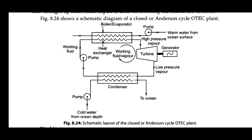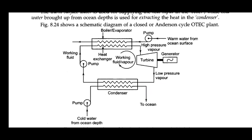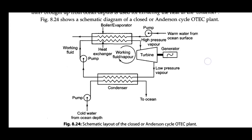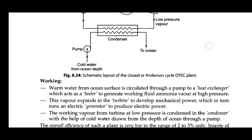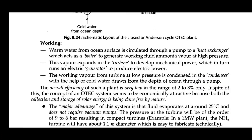Cold water is circulated in the cold water circuit. Working: warm water from the ocean surface is circulated through a pump and through a heat exchanger which acts like a boiler. The vapor expands in the turbine to develop mechanical power, which rotates the generator to produce electricity. The working vapor from the turbine at low pressure is condensed in the condenser with the help of cold water and is led back to the ocean.